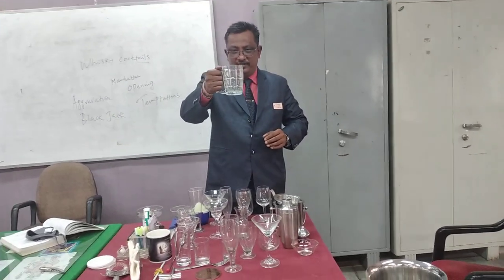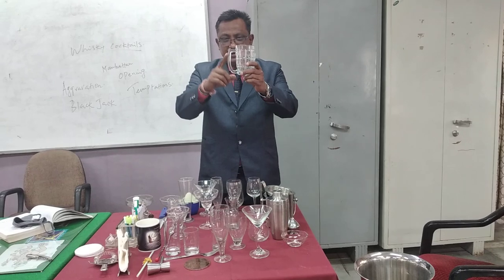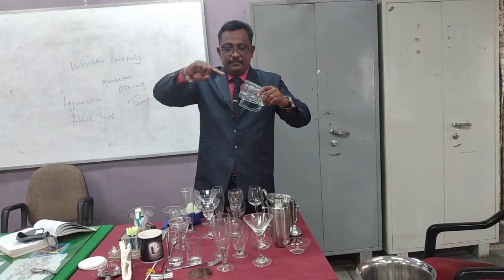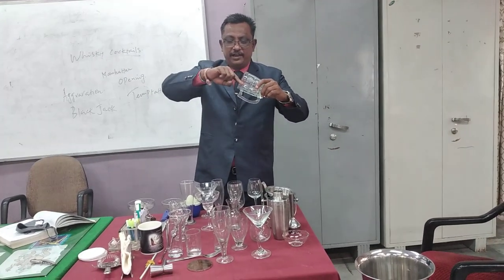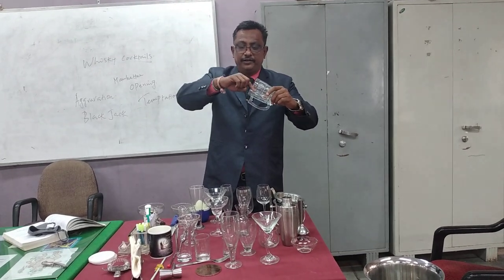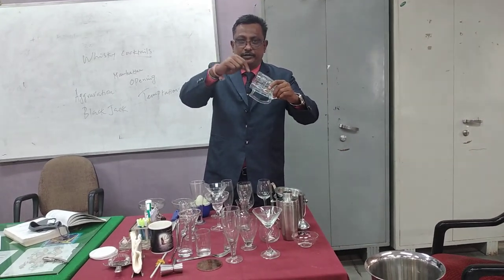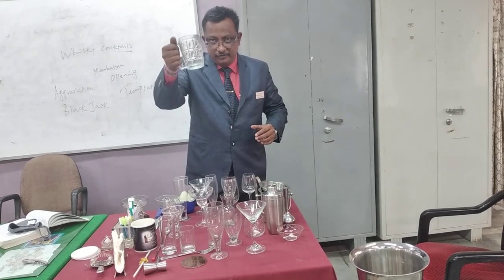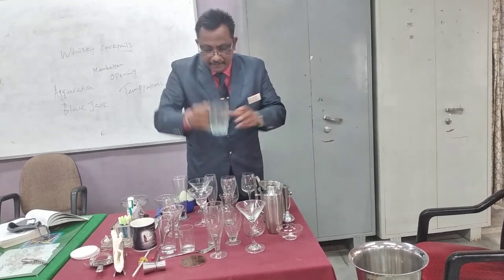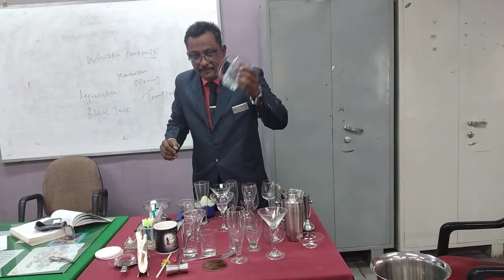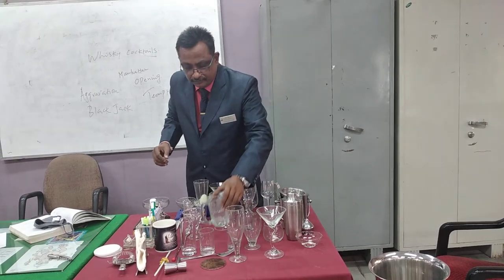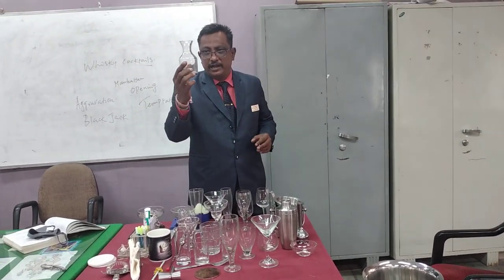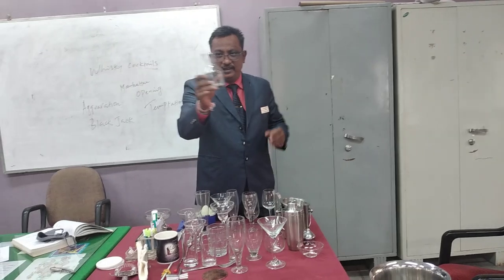This is a beer mug. You can see it has a handle. When you serve beer, you tilt the glass at 40 degrees and pour from the bottle. The capacity of the beer mug is 10 to 12 ounces.